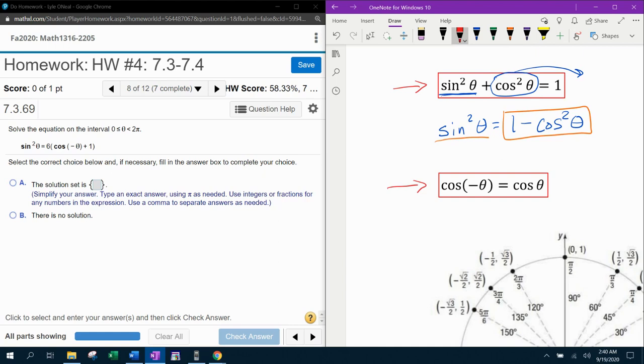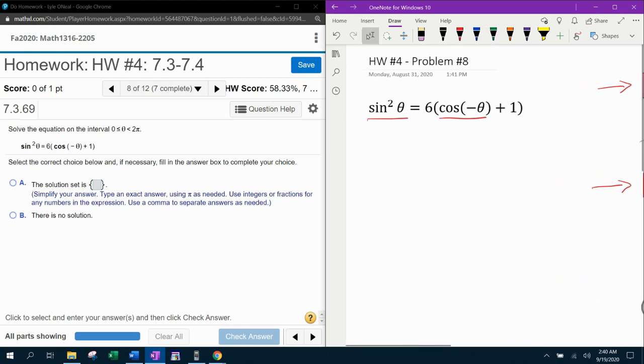Now, for the even odd property, it says if I've got cosine of negative theta, that's going to be the same as just cosine of theta. That's the way the even odd property works for cosine. And so now we need to do our substitutions. Sine squared theta can be replaced with one minus cosine squared theta, and cosine of negative theta can be replaced with just cosine of theta. So now I've taken care of the two immediate injuries, the two immediate things I need to deal with.